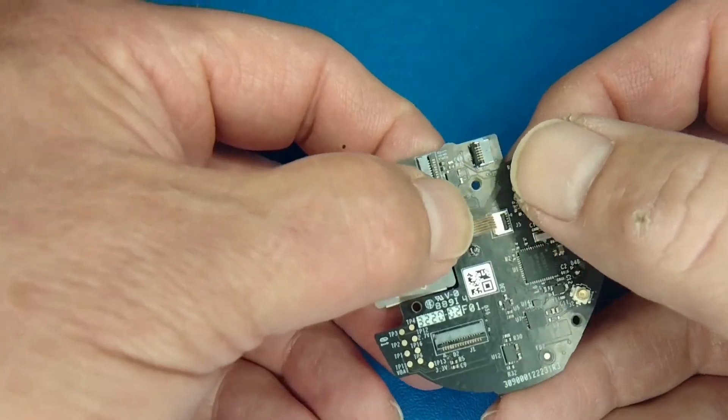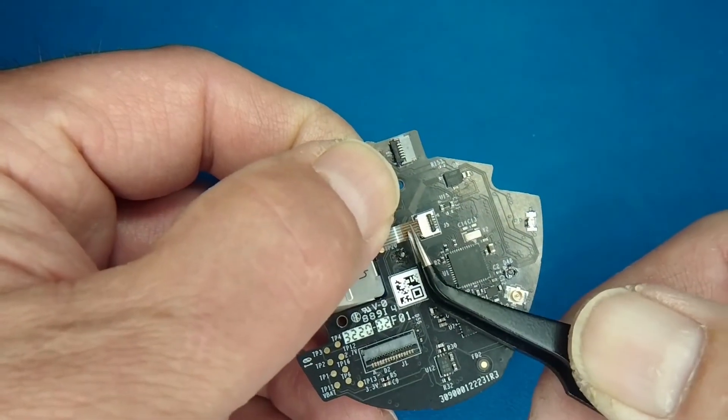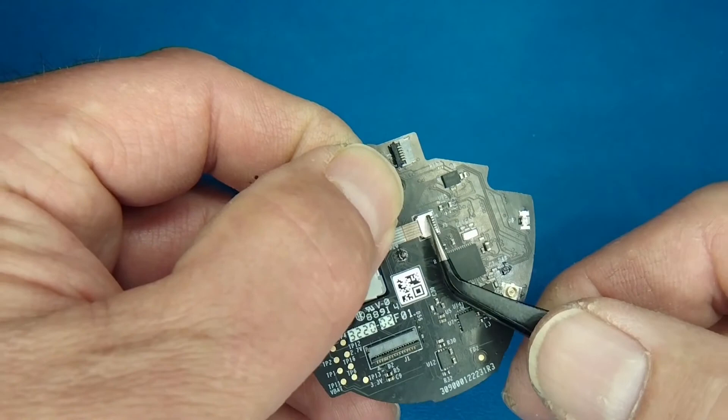So you're going to feed it back onto the circuit card. Get that ribbon cable installed. Put the tab down.